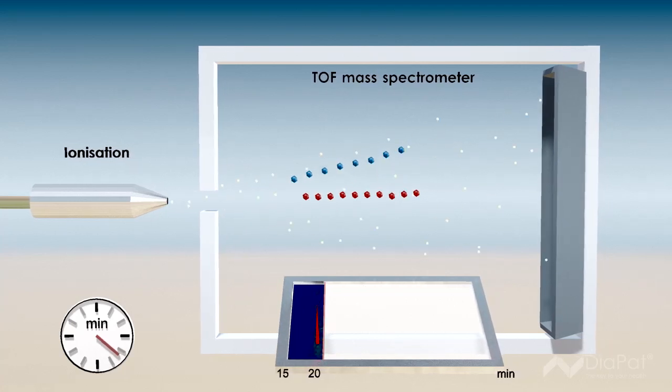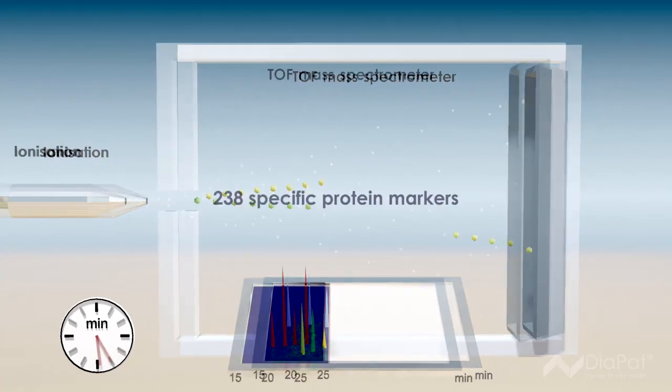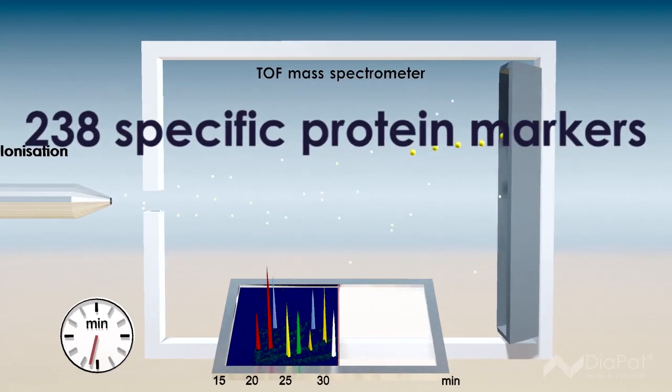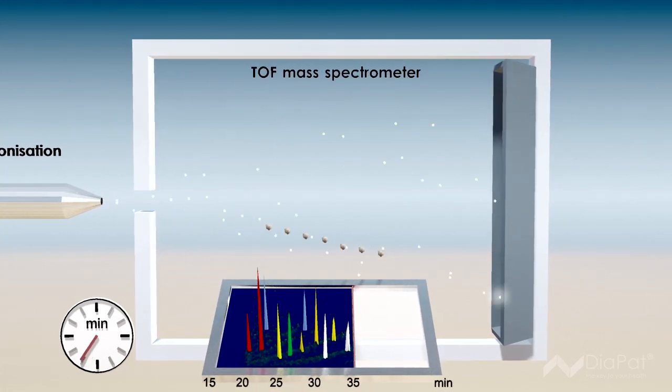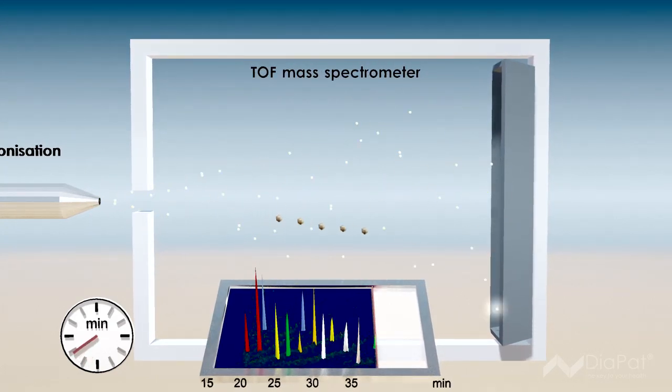The unique technology uses 238 protein markers, allowing an extraordinary accuracy in diagnosing atherosclerosis.